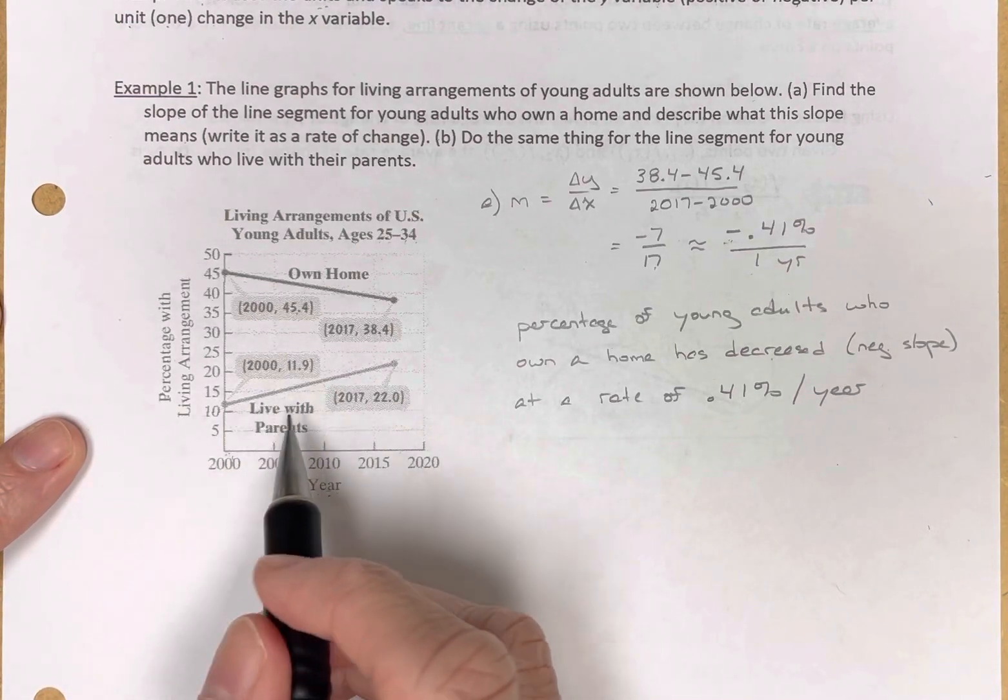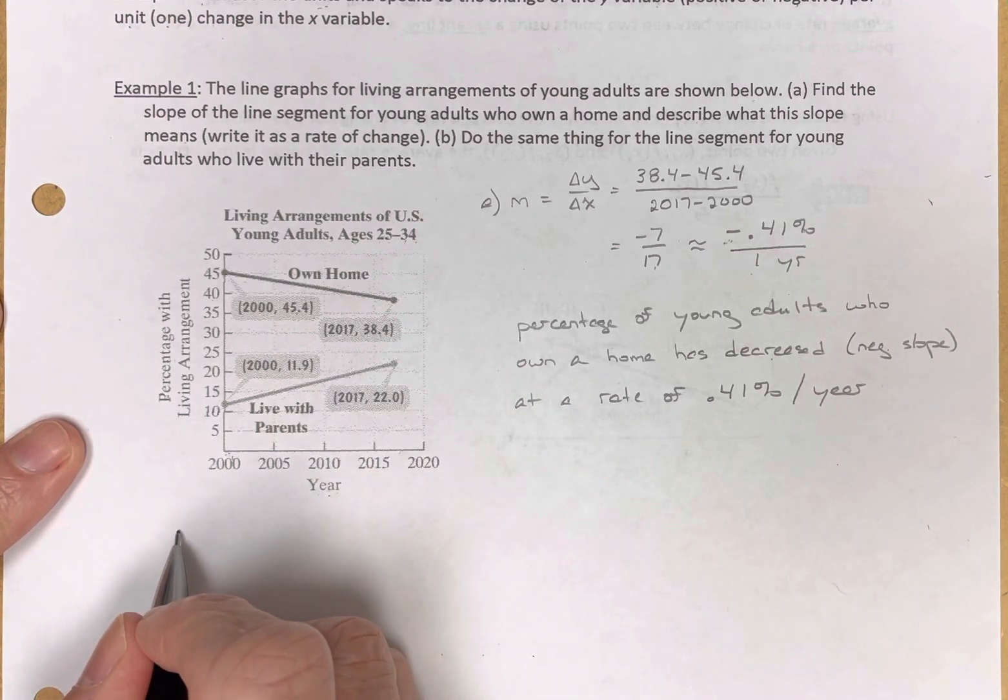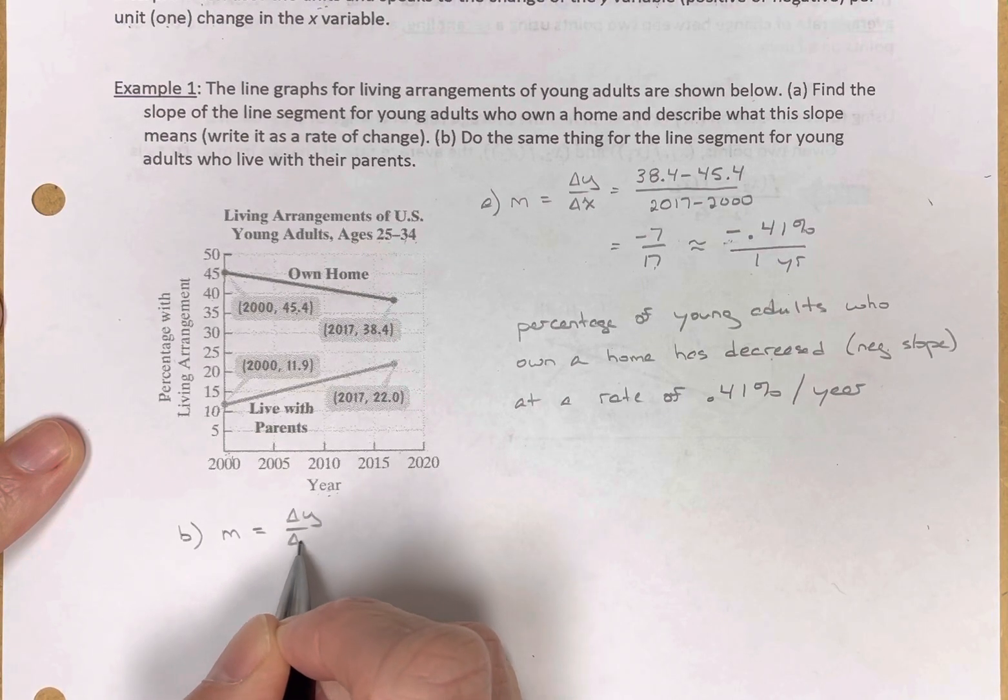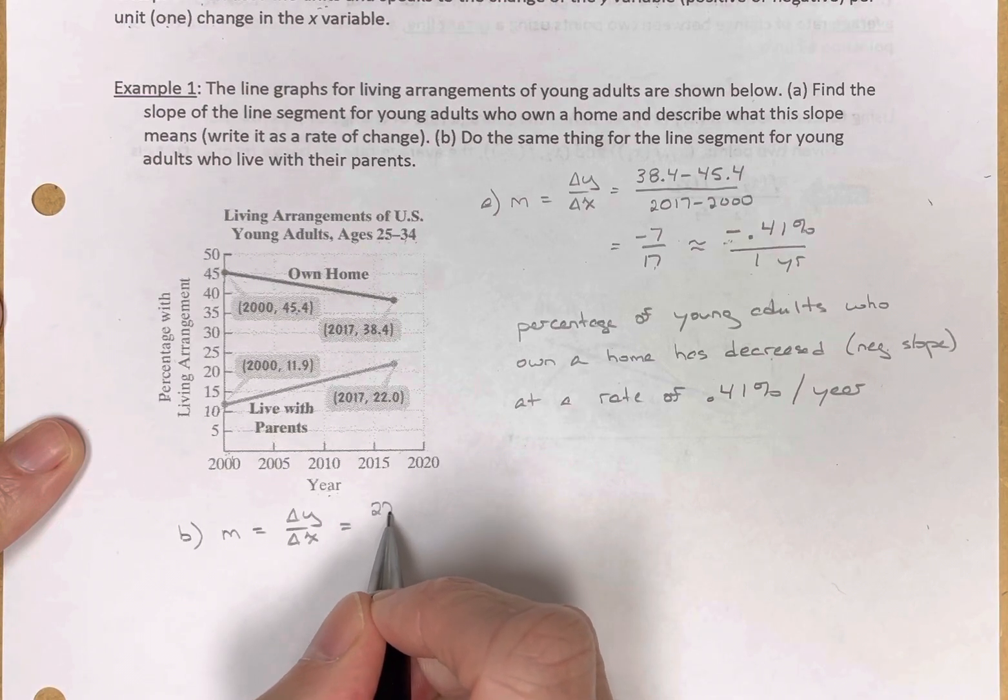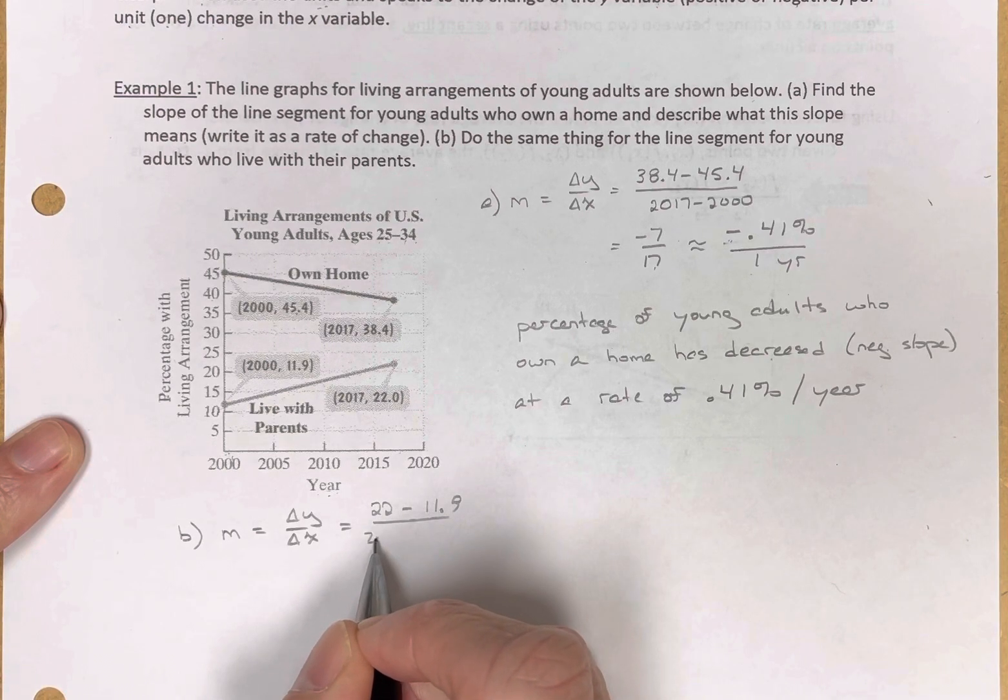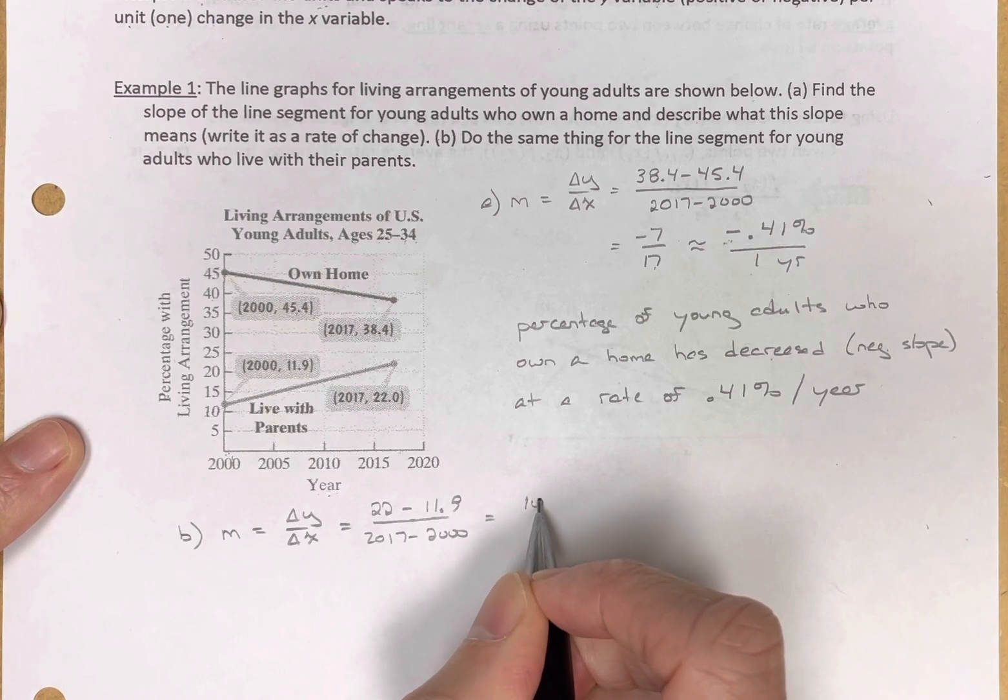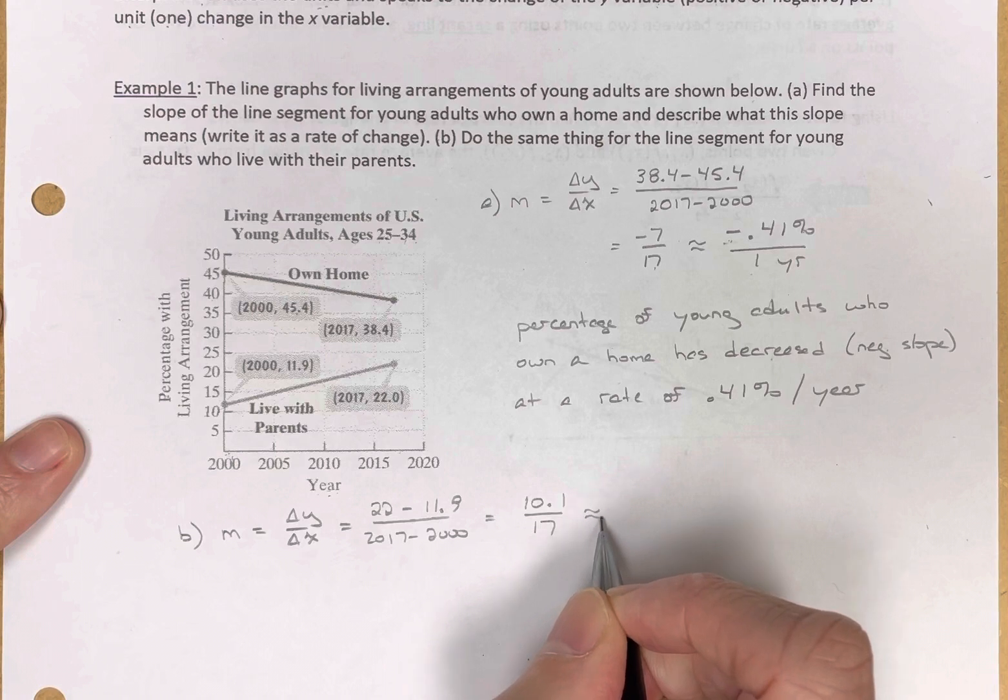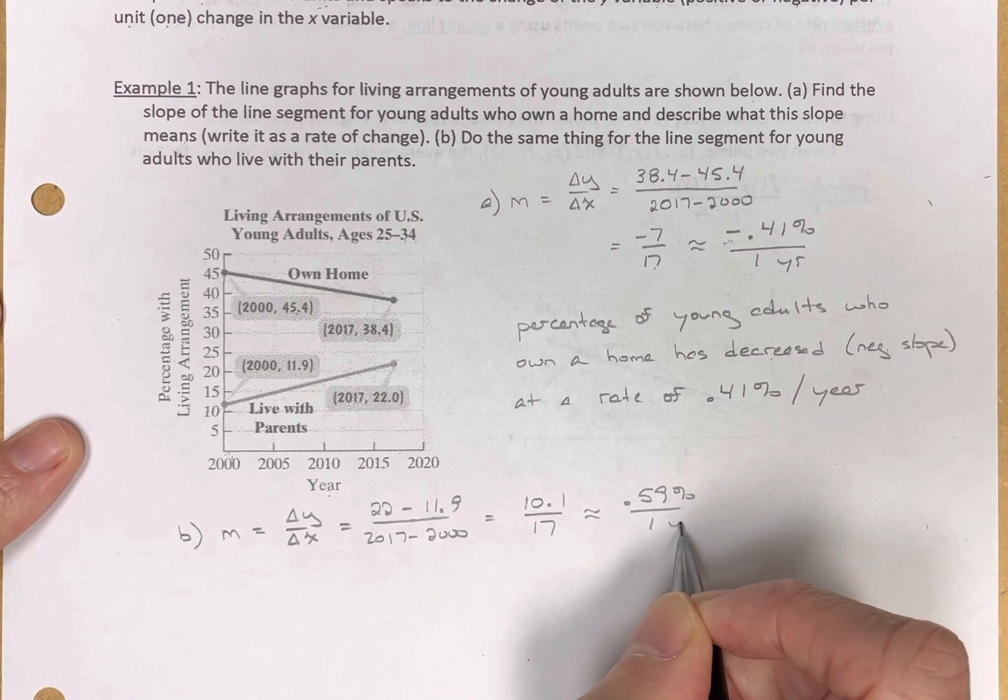Let's look at the same thing for those who live with their parents. We see there's an increase here. So for B, the slope is the change in y over the change in x. For living with their parents, it's going to be 22 minus 11.9 divided by 2017 minus 2000, which gives us 10.1 over 17, which is approximately 0.59% per one year.